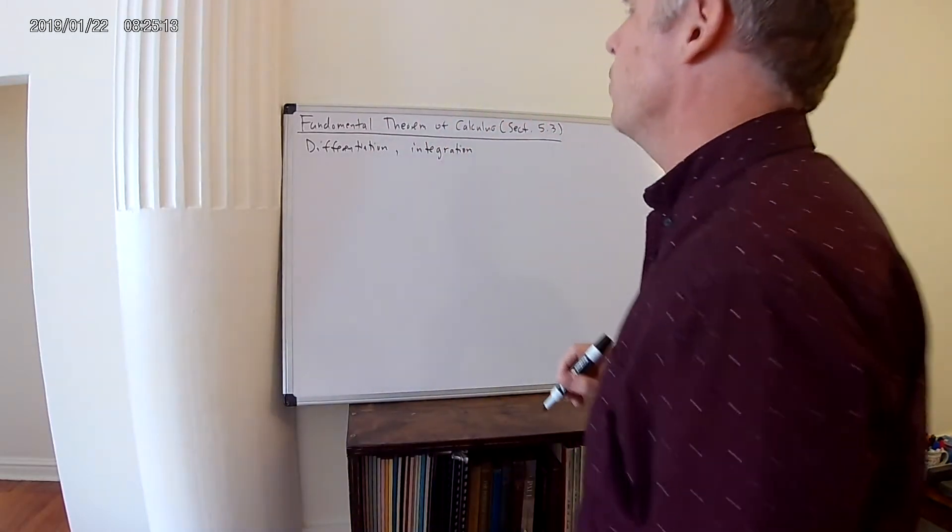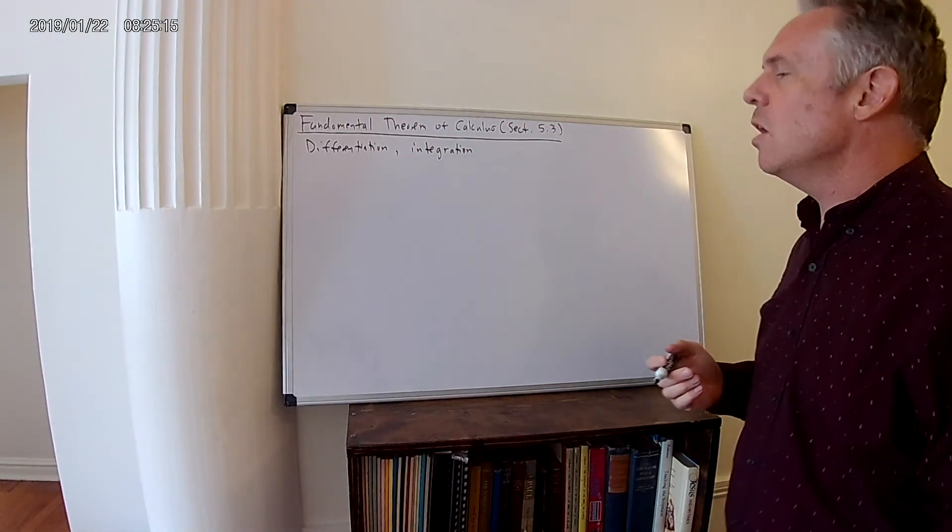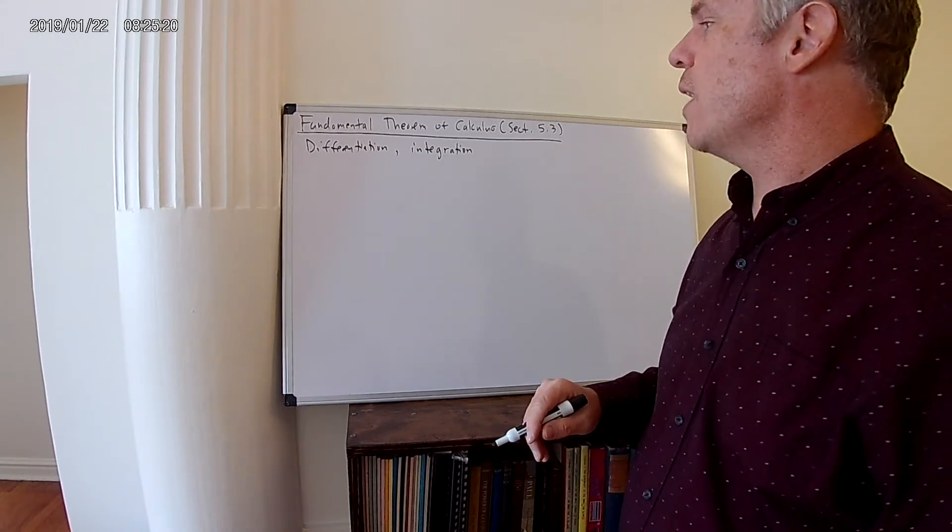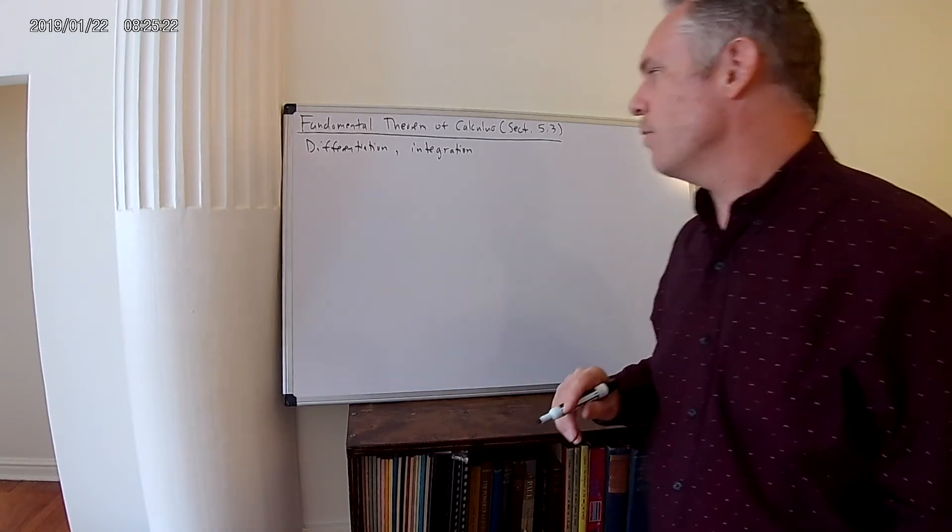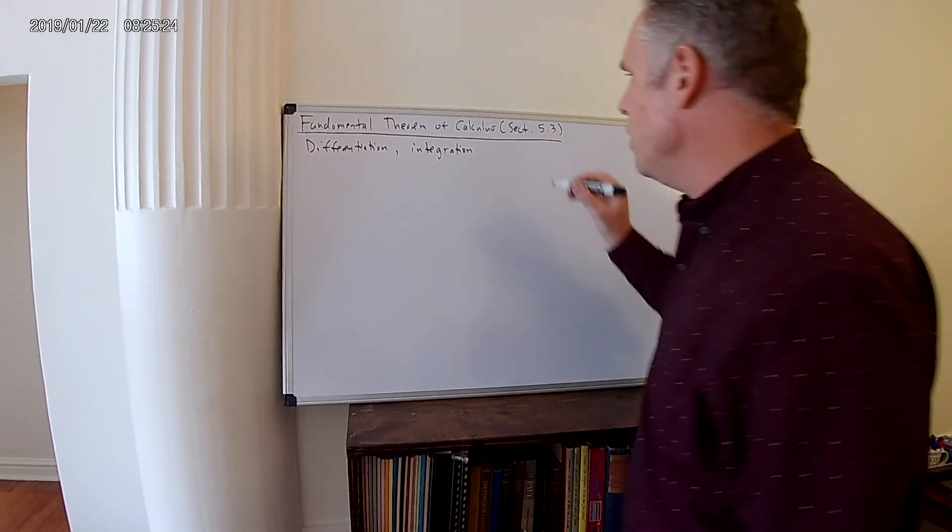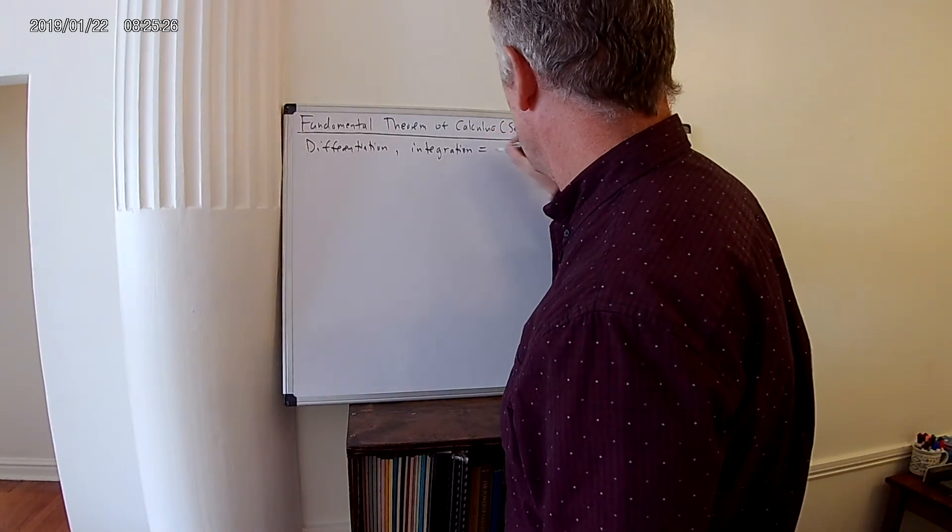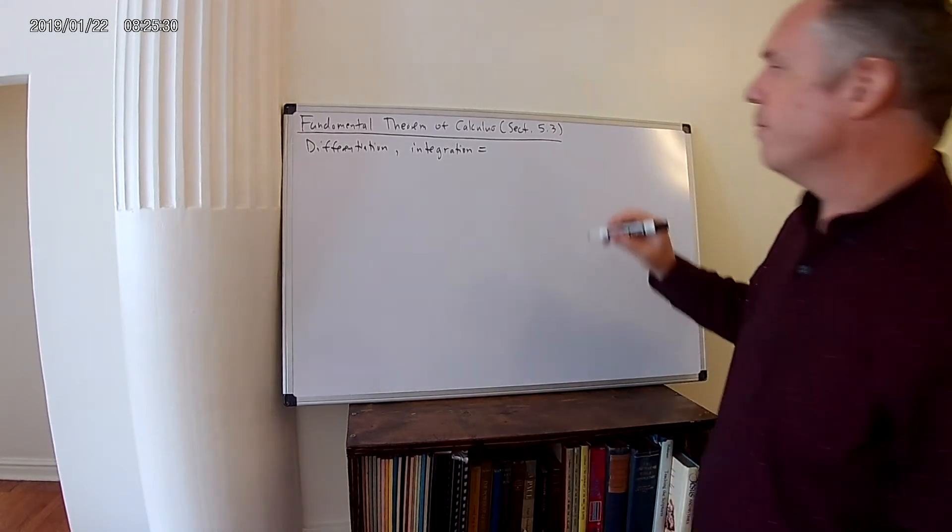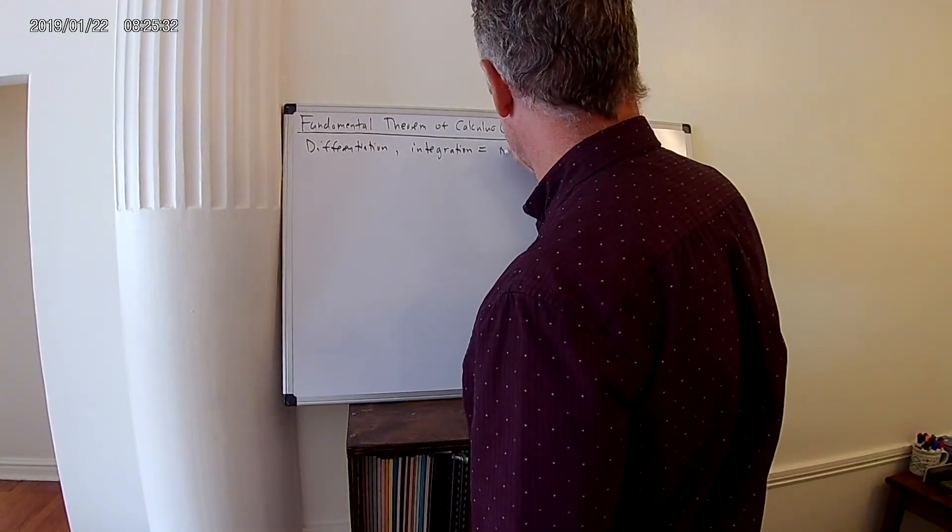Differentiation is where we take the derivative of a function, which is the slope of that function at a particular point. Integration is where we find the area under a curve. These two processes are inverse operations of each other.